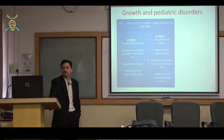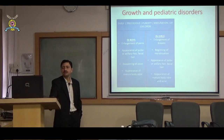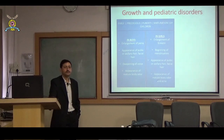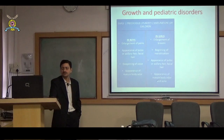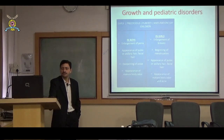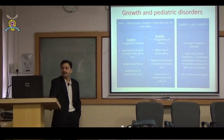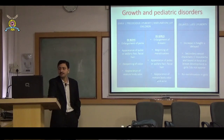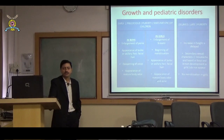Other growth and pediatric disorders include precocious puberty: in boys — enlargement of penis before age 7–8, appearance of pubic, axillary, or facial hair, deepening of voice, or mature body odor; in girls — early breast enlargement, early menstruation, or appearance of pubic, axillary, or facial hair. Delayed puberty includes delayed height increase, failure of secondary sexual characters to appear by age 14–15, and no menstruation in girls.